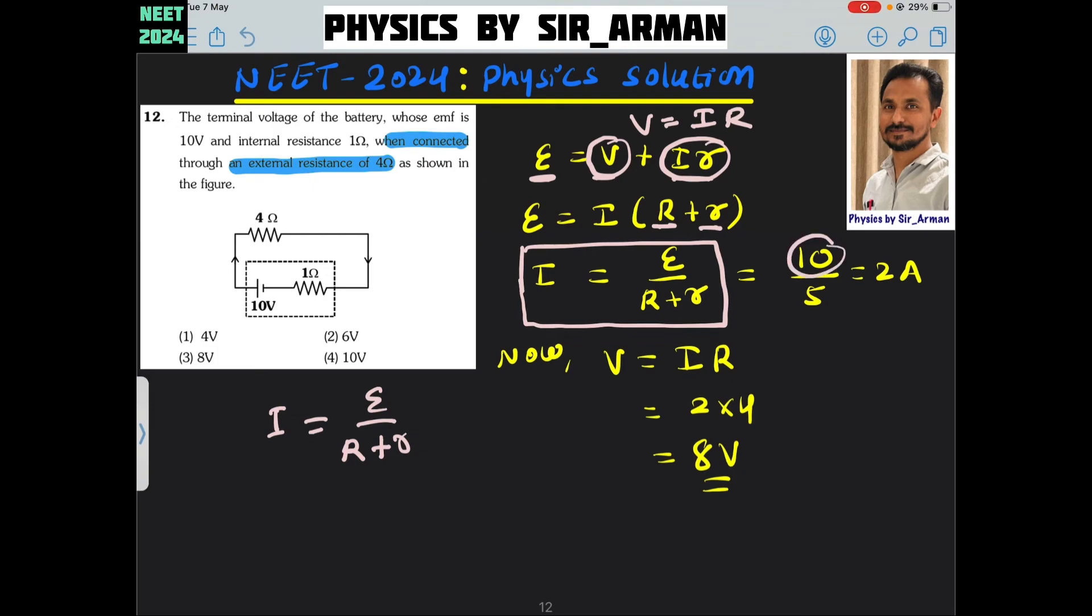The total EMF is 10 and the total resistance is 4 plus 1, 5 ohm. So the total current drawn from the battery will be 2 ampere. Then how much voltage will drop across this 4 ohm resistance? The voltage drop will be I into R.